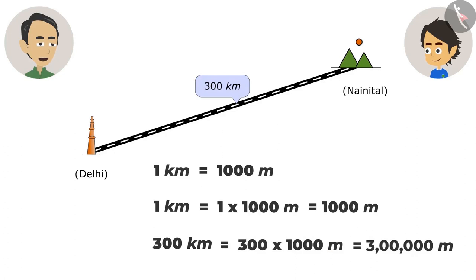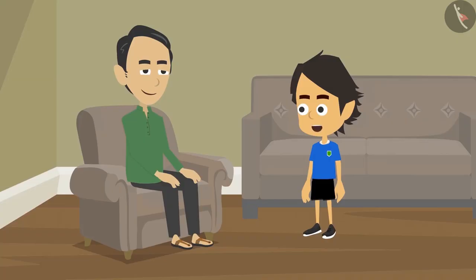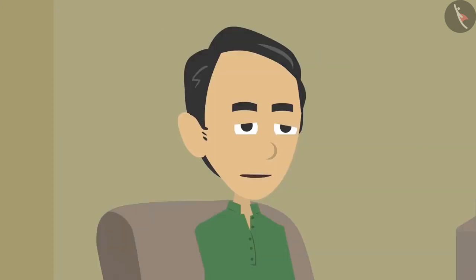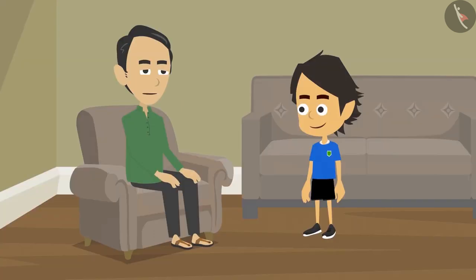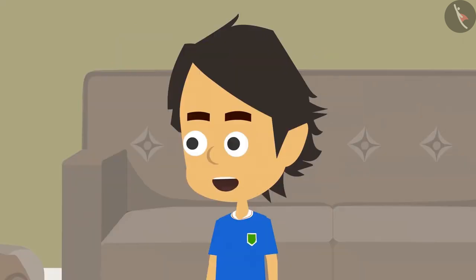That's why we say it's 300 kilometers away. But how can I remember that there are 1,000 meters in a kilometer? Papa, for this you just need to remember that 'kilo' means one thousand — then kilometer will mean one thousand meters. Yes, now it will be easy to remember!